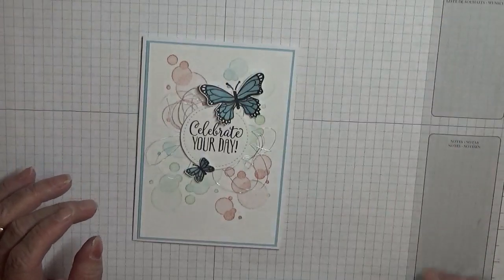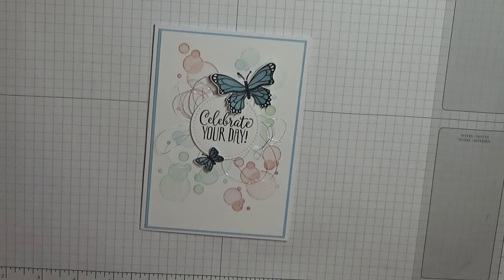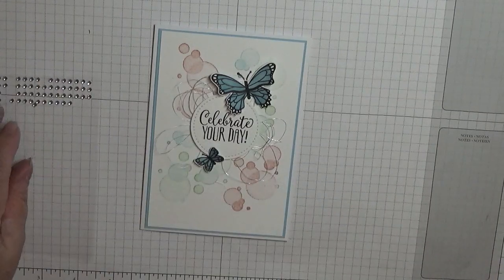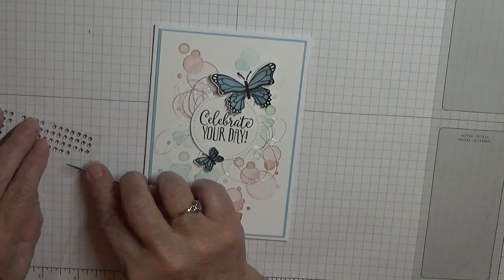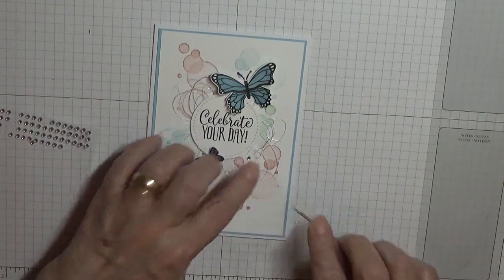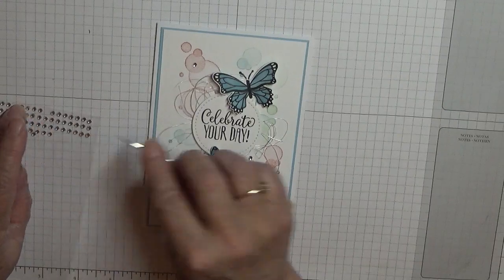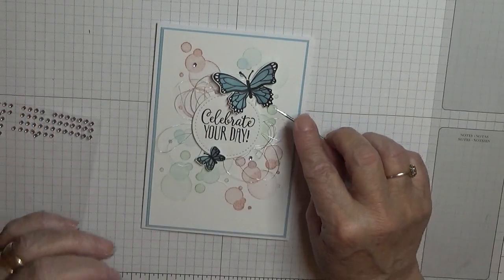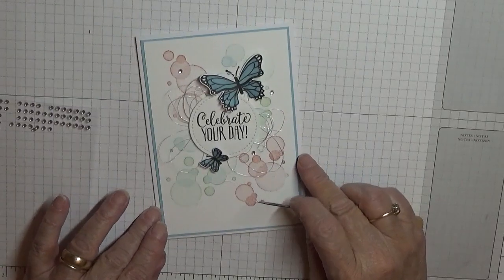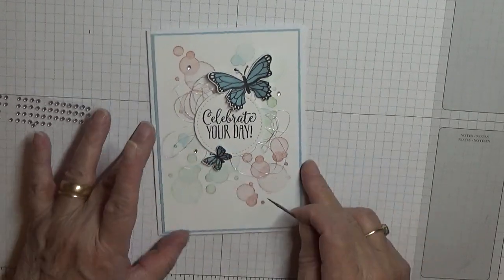All we've got to do now is add some gems which I've got here. And I just scattered three, so I'm going to put one there, one there, and one there. And that's it.